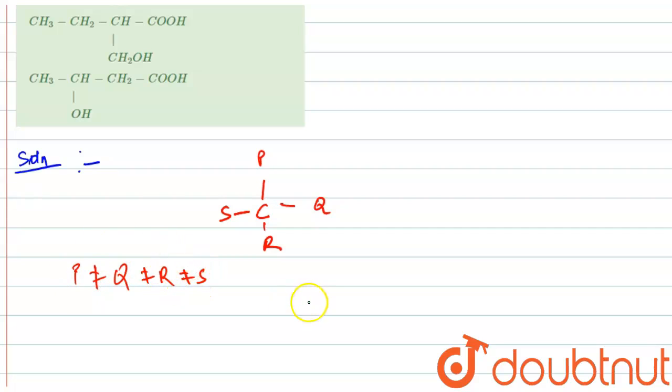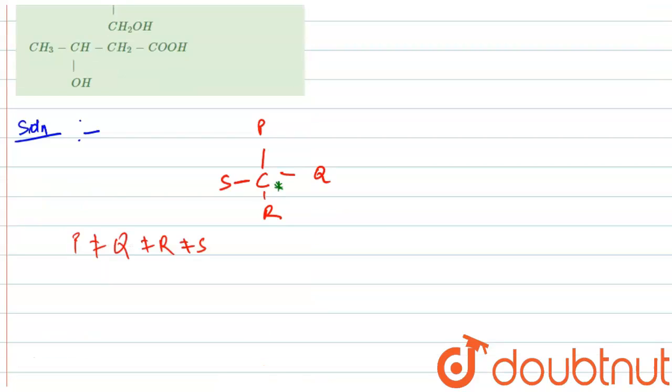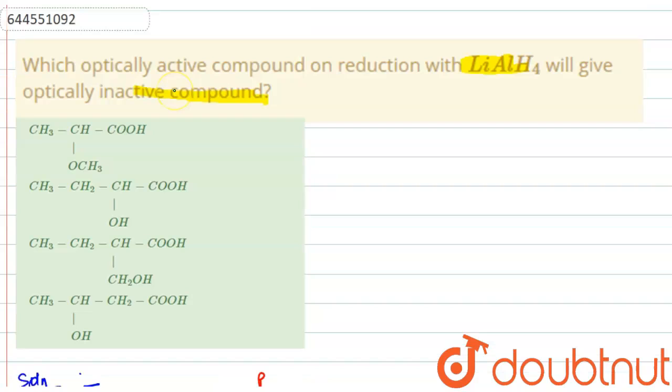It means that carbon C is a chiral carbon and it is denoted by a star, C star. And in the given four options, it is clearly seen that COOH is present in all the four compounds.